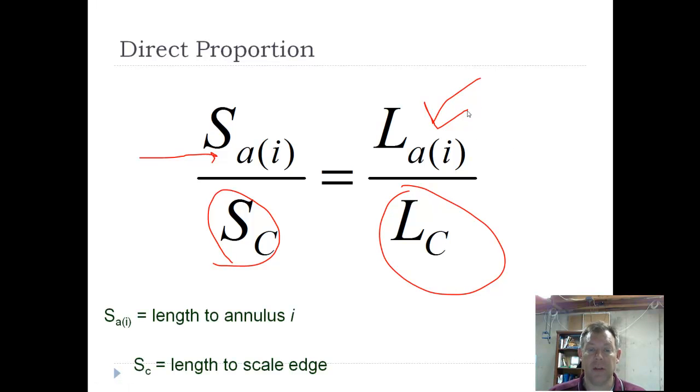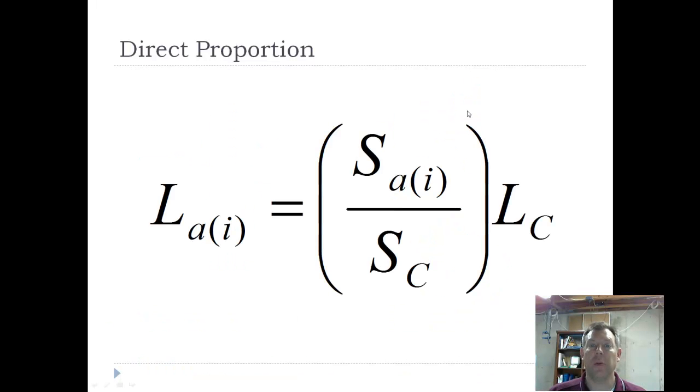So you rearrange. Here's the definition for each of those, and you rearrange and you see that the length of the fish at each annulus is simply take the length to that annulus on the scale divided by the length of the scale multiplied by the length of the fish when you captured. Straightforward.